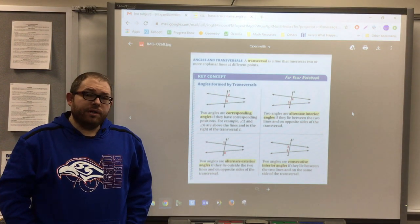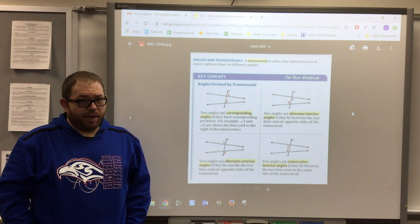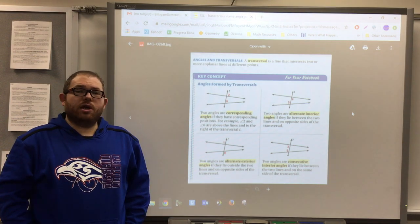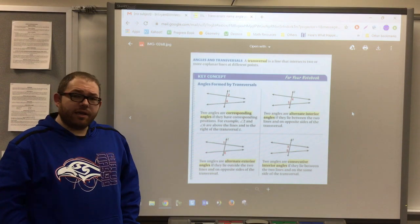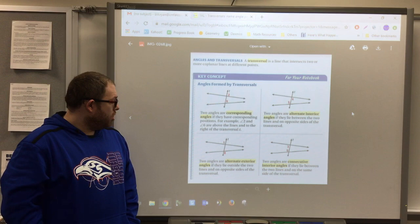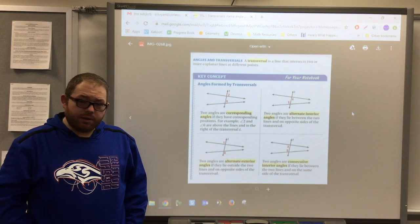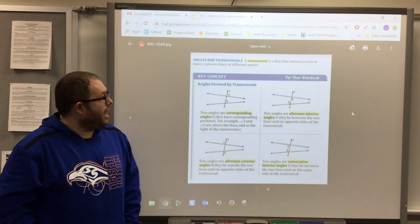Okay, geometry. For skill two this week, it's all vocabulary. So we're going to talk about and remind ourselves about corresponding angles, alternate interior angles, alternate exterior angles, and consecutive interior angles.